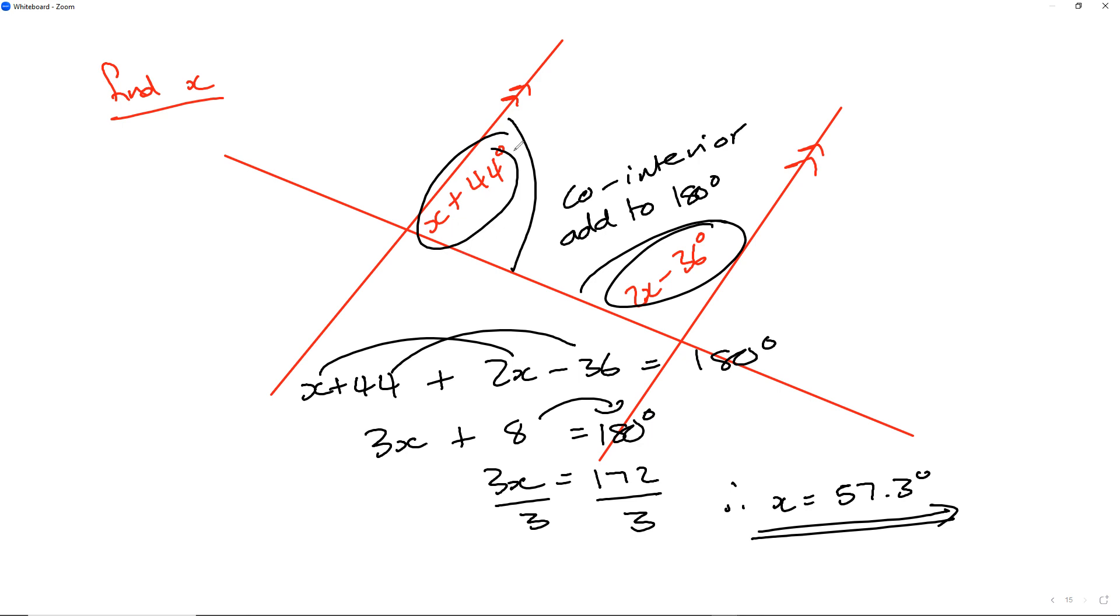So if I substitute 57.3 in here, I'll get 57.3 plus 44, which comes to 101.3. And if I multiply 2 times 57.3 and then minus 36 from there, I'll get 78.6.